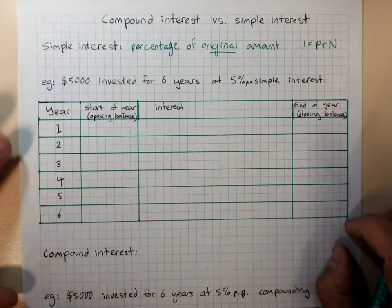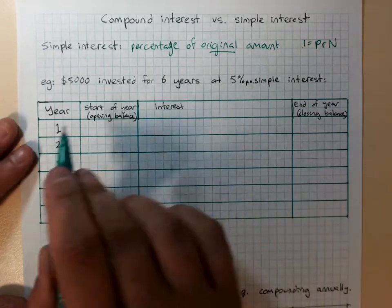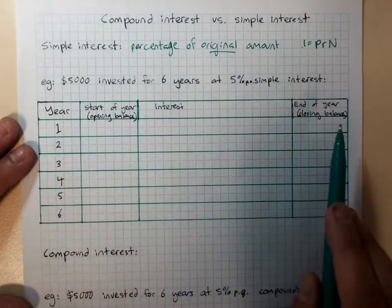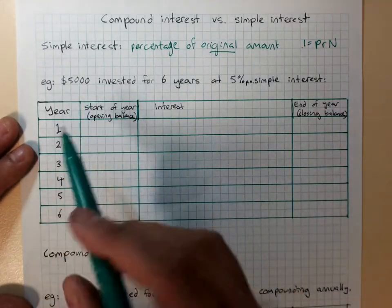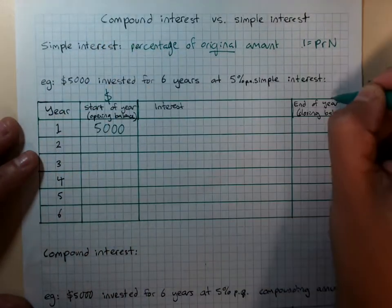So, for example, $5,000 invested for 6 years at 5% per annum simple interest. We could if we wanted to do this in a table. At the start of year 1, we've got $5,000. We'd better make that a dollar sign above this.